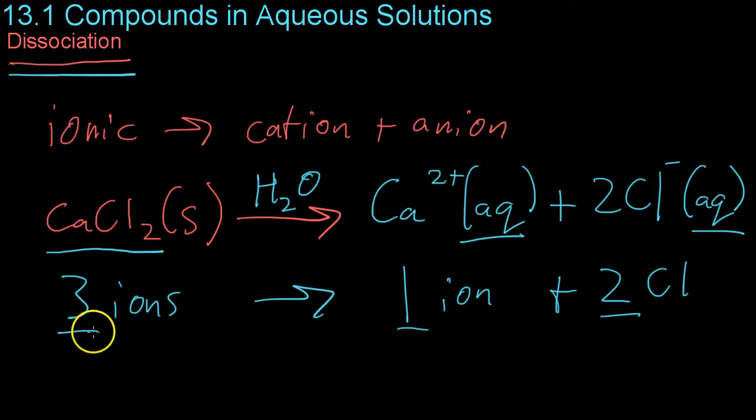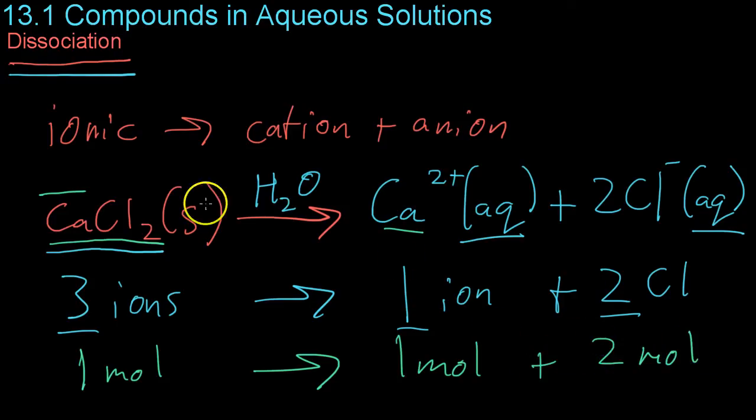So the number of ions on each side remains balanced. Likewise, because you can multiply this by Avogadro's number or any number really, the number of moles of each ion remain constant. So if you have one mole of calcium chloride, you will end up with one mole of calcium, because there's basically one mole of calcium inside this ionic compound, plus two moles of chlorine ions. This goes back to the law of conservation of mass. You can't just destroy ions because they dissociate in solution.